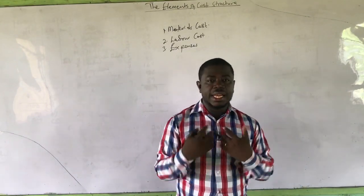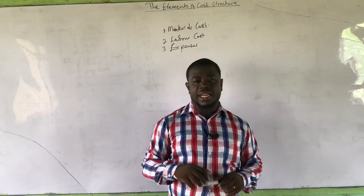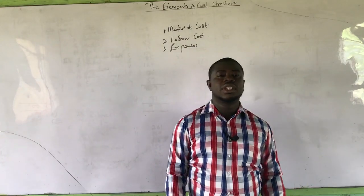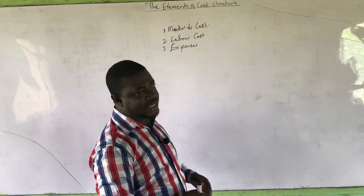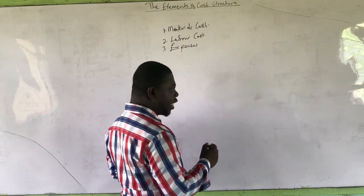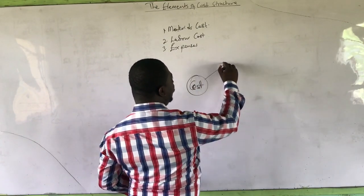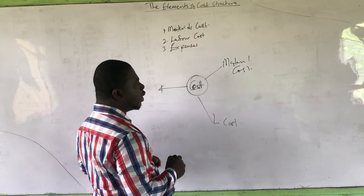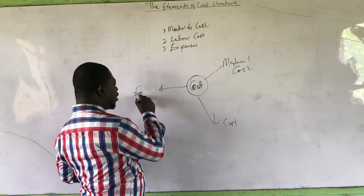Labour has to do with human efforts; labour cost has to do with the cost of those human efforts. Finally, we talk about expenses. We define expenses in cost as any other cost apart from material cost and labour cost. Because we are talking about elements of cost, if a particular cost is not material and not labour, it automatically should be called expenses.